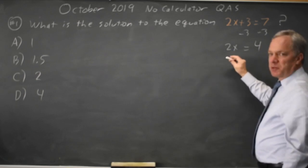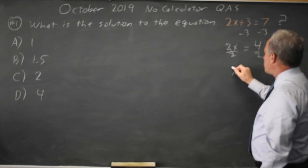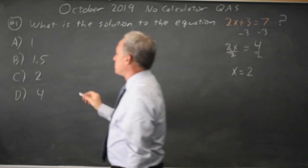Now to get x by itself, since x is multiplied by 2, I'll divide both sides by 2. 2 over 2 is 1, leaving x equals 4 over 2 is 2, so that's choice C.